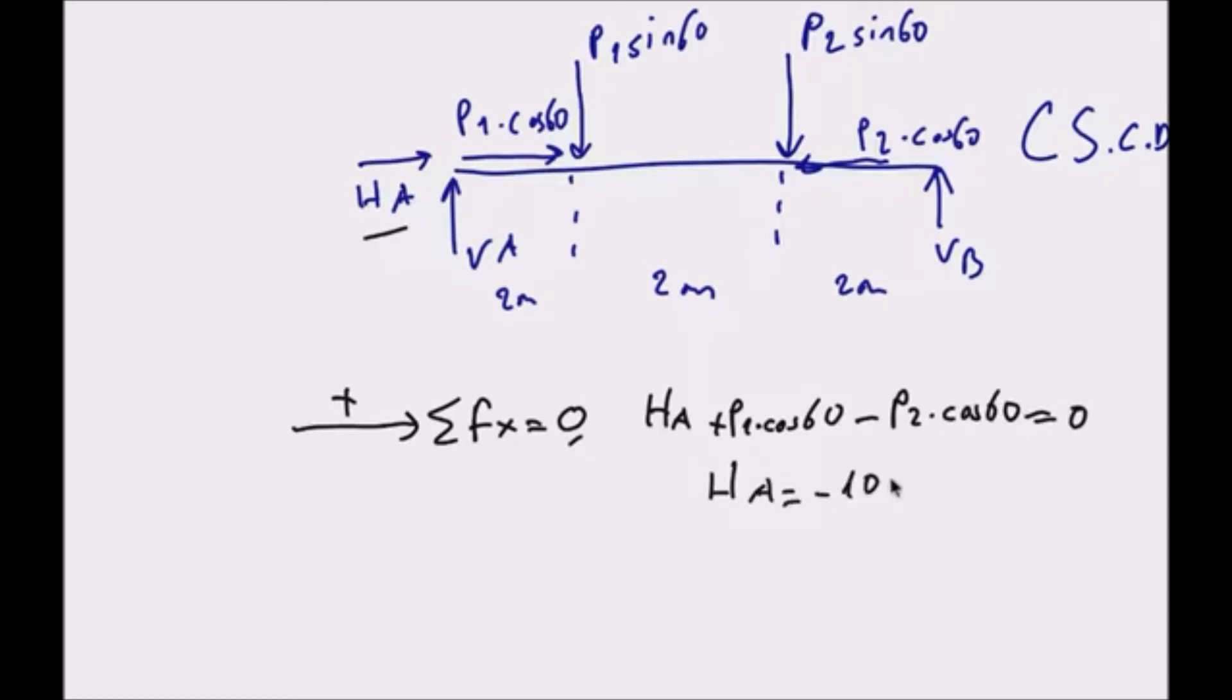So what is this minus 10 kN? Actually, the magnitude doesn't change. Magnitude is 10 kN. Minus symbol in result indicates a change in direction. So HA force is 10 kN in the left direction.